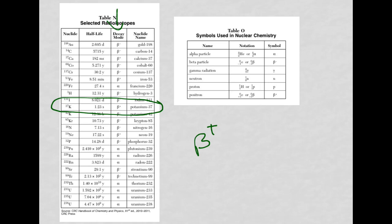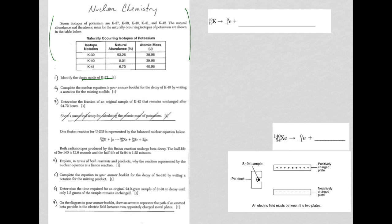Let's take a look at the next question. It says to complete the nuclear equation in your answer booklet for the decay of potassium-40 by writing the notation for the missing nuclei. I have it here. Let's just bring it down.